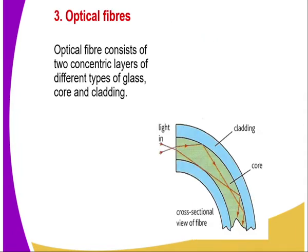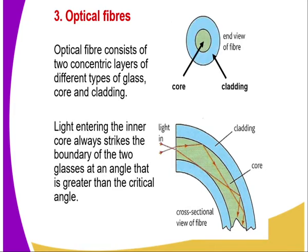Number three, we have what we refer to as optic fibers. An optical fiber consists of two concentric layers of different types of glass — core and cladding. They have been arranged in a way that total internal refraction will take place. So in case there is light entering the inner core, it will always strike the boundary of the two glasses at an angle greater than the critical angle, so total internal refraction will take place all through.